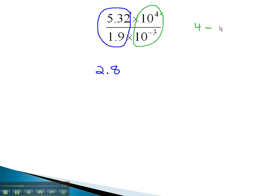Notice, 4 minus negative 3 is the same as 4 plus 3, or 7.